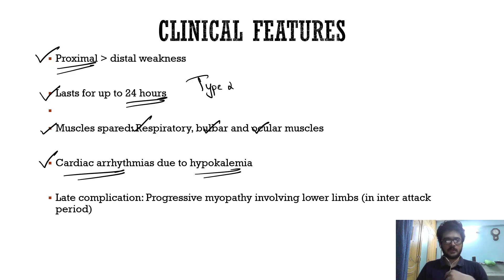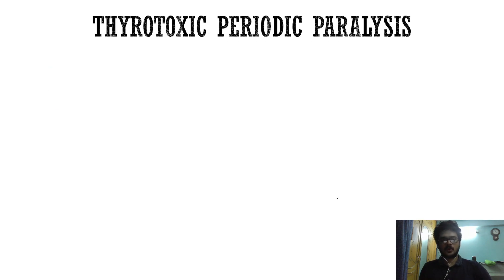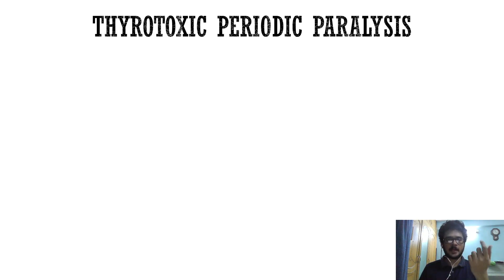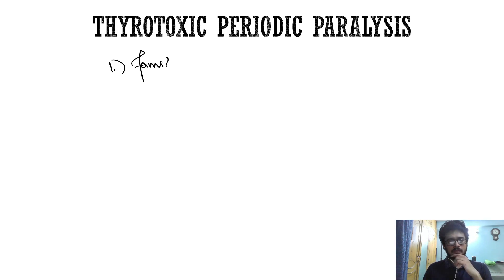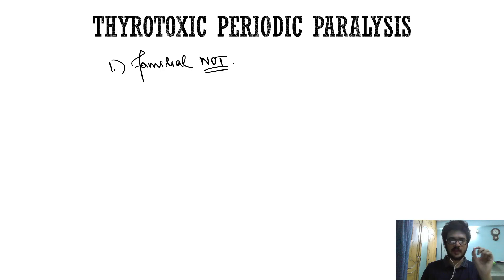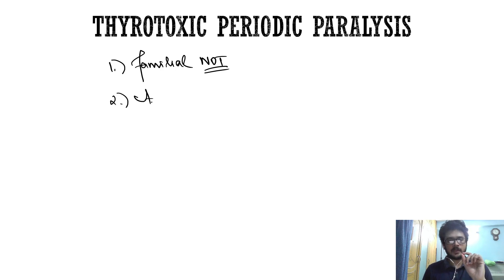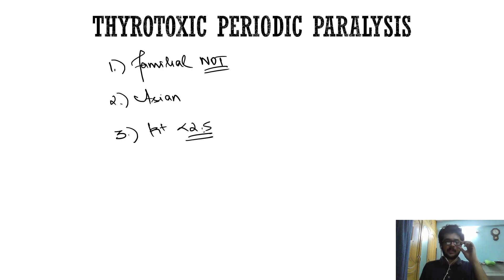Even though patients recover after attacks, they develop inter-attack weakness — a progressive myopathy between attacks, usually involving the lower limbs. Regarding thyrotoxic periodic paralysis: unlike primary hypokalemic periodic paralysis, it is not familial. It is very common in patients of Asian descent, and serum potassium is much lower, usually below 2.5 mEq/L.